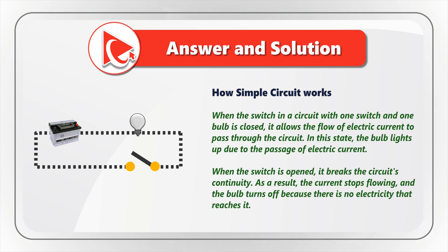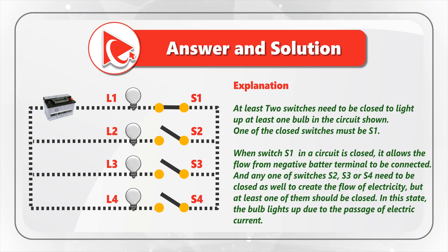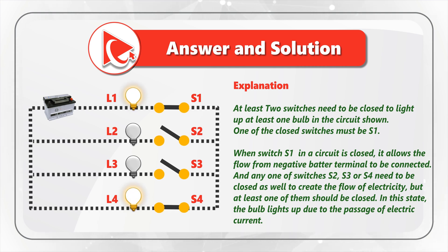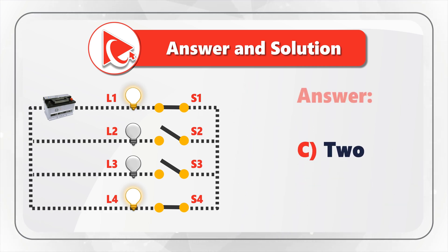Now, with the understanding of this simple circuit, let's go back to the original question. At least two switches need to be closed to light up at least one bulb in the circuit shown, and one of the closed switches must be S1. When switch S1 is closed, it allows the flow from the negative battery terminal to be connected. In addition, any one of the switches S2, S3, or S4 need to be closed as well to create the flow of electricity. So the correct answer here is Choice C: two switches.